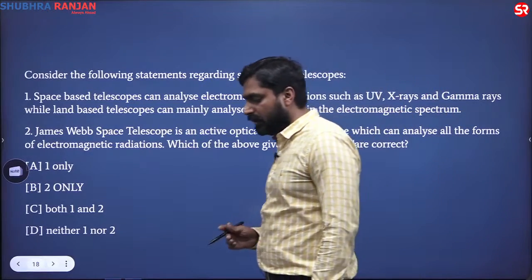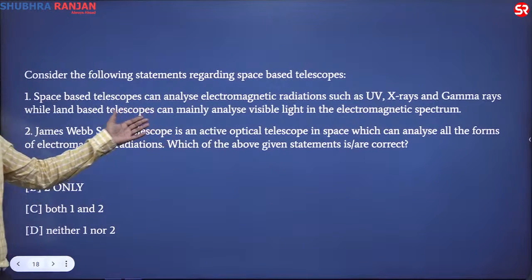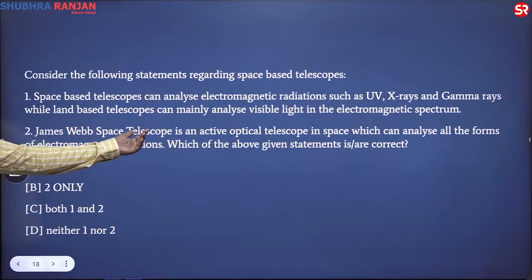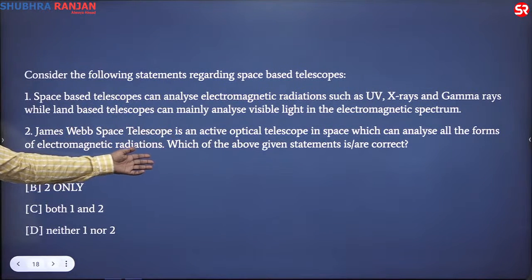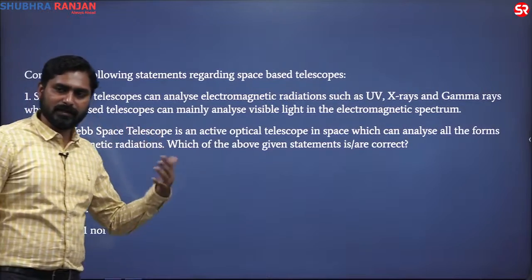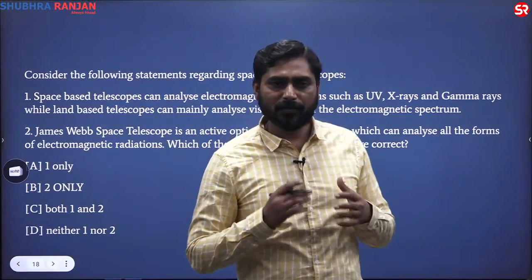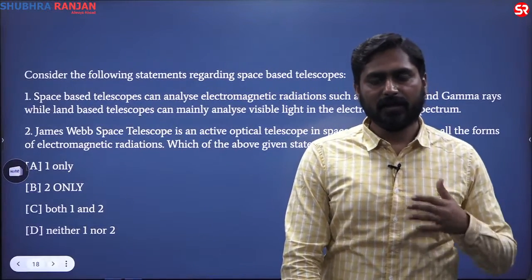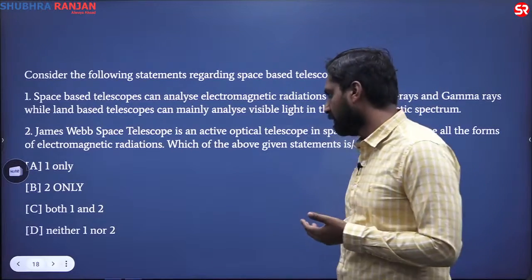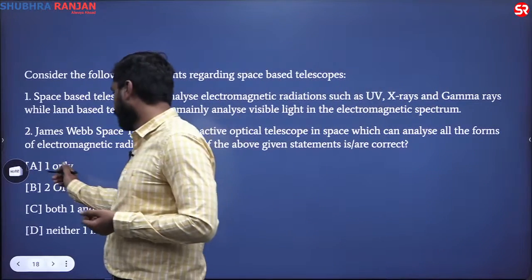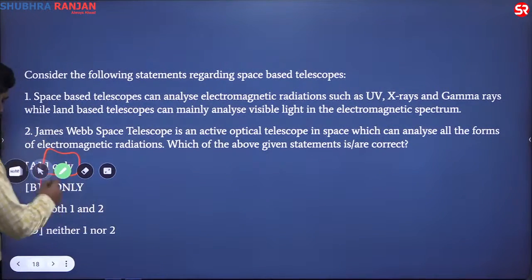Let us say you do not know that first statement — it is actually correct. The second statement says: 'James Webb space telescope is an active optical telescope in space which can analyze all forms of electromagnetic radiation.' This is an incorrect statement because the James Webb telescope observes space in the infrared region only. So the answer here is one only.